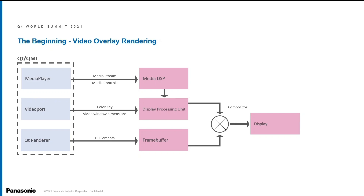To allow our interactive GUIs to control this process using Qt was relatively simple. It was a matter of creating some Qt and QML classes and elements that were able to interface with the media DSPs and display processing hardware to create and configure video planes. The final step for displaying video and graphics was done in hardware where the multiple planes were composited together. This method for rendering video and graphics was used in our systems for quite a while.